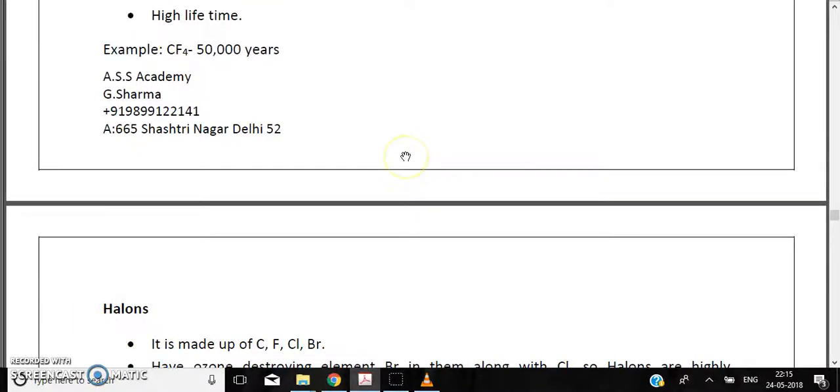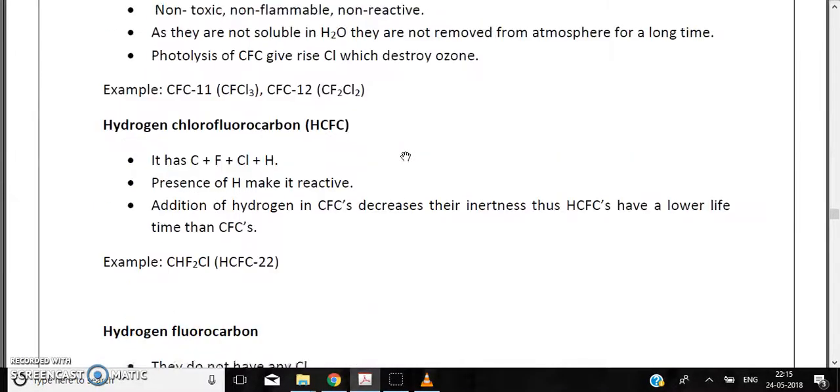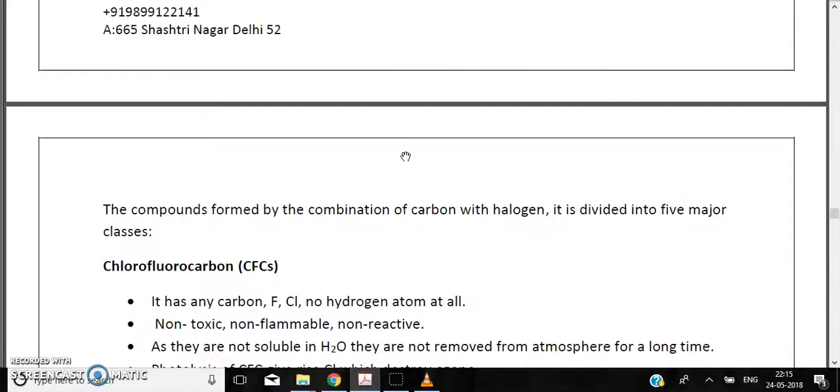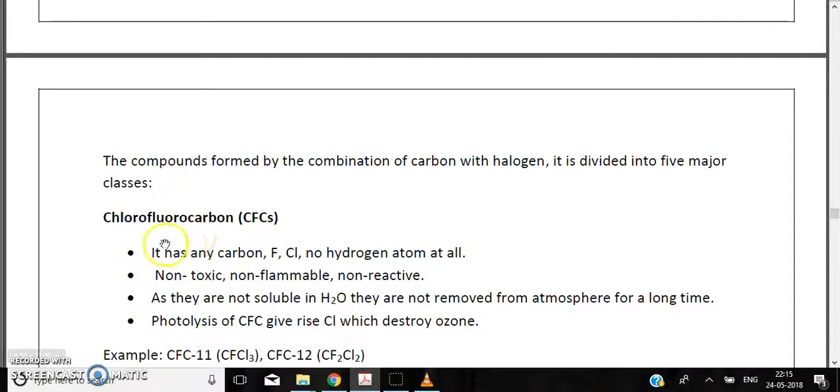We will be dealing with them in detail one by one. Let's see what they are and how they impact our environment. Let's start with the first member of the halocarbon family, which is chlorofluorocarbon or CFCs. As the name suggests, they have only carbon, fluorine, chlorine, and no hydrogen atom at all.